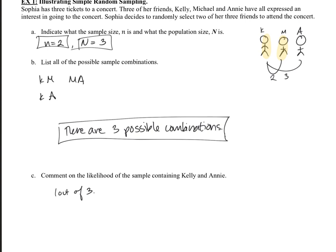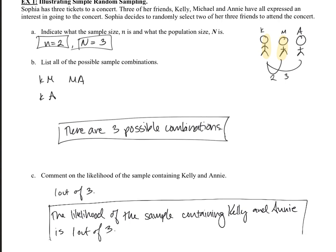Let me write that as a better complete sentence. So likelihood of the sample containing Kelly and Annie, the likelihood of the sample containing Kelly, it should be a capital K, Kelly and Annie is one out of three.